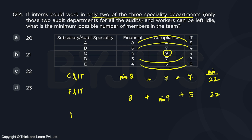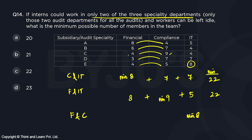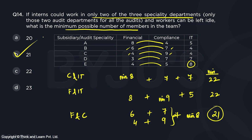For Case 3, if interns work in finance and compliance, we need a minimum of eight permanent employees to cover IT. The sum for finance and compliance across subsidiaries gives values of 12, 13, 13, 10, and 9 — the maximum interns possible is 13 (either six plus seven, or four plus nine). So 13 interns plus eight permanent gives 21. The minimum possible number of members in the team is 21, which is option B.